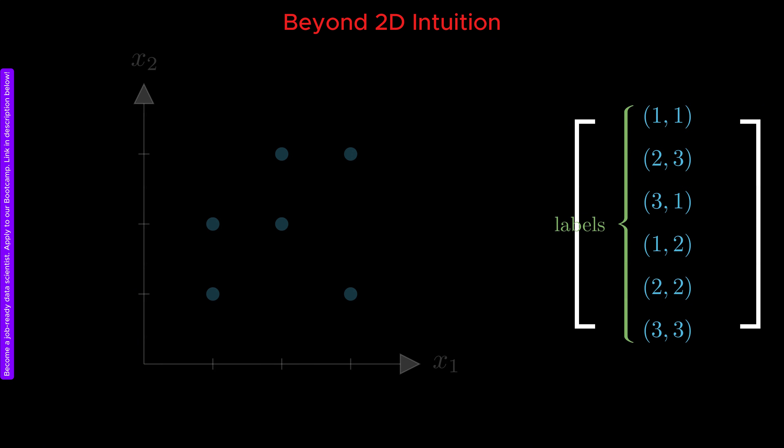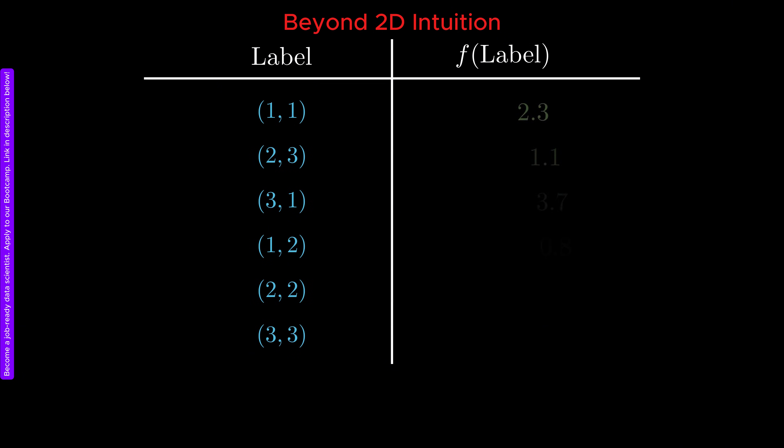Now, our plot becomes much simpler. We have a set of labels and a corresponding set of function values. We can arrange this information into a table with two columns. One column contains the labels and the other contains the function values.